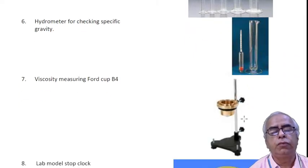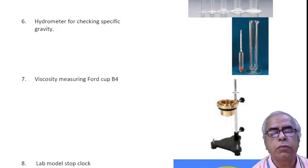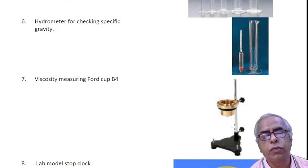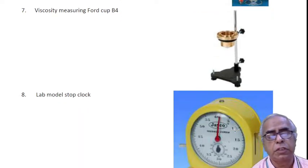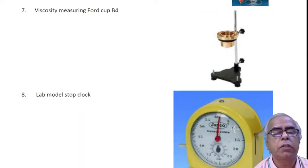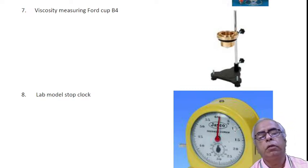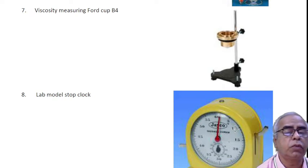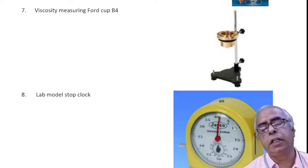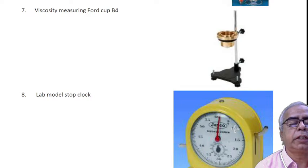This is called the Ford cup, Ford cup B4. This is useful for measuring the viscosity of paint or resins. It is given in terms of seconds or minutes based on the type of resin.